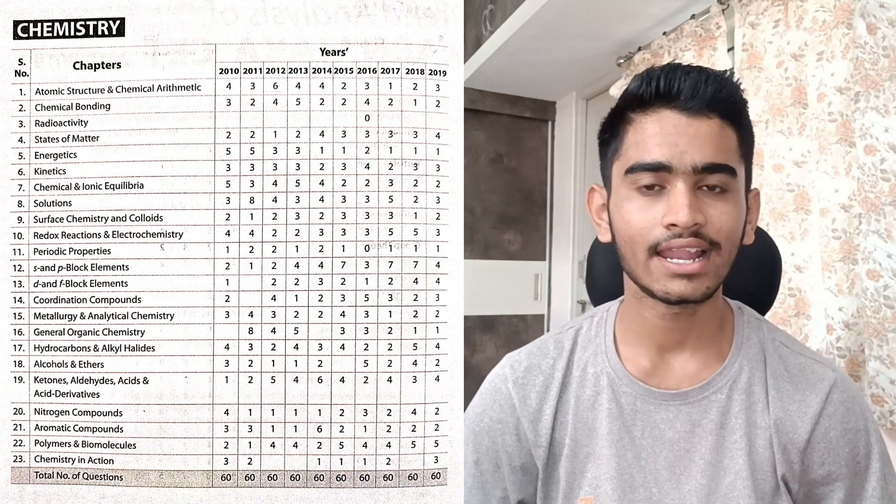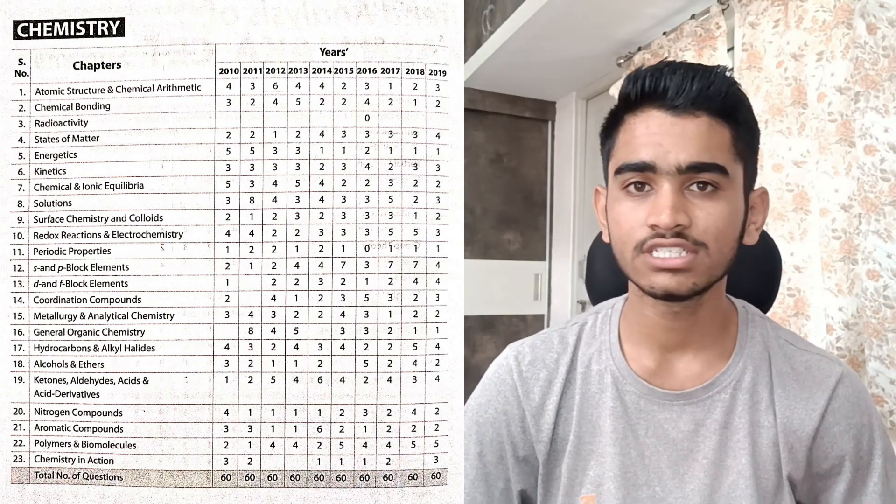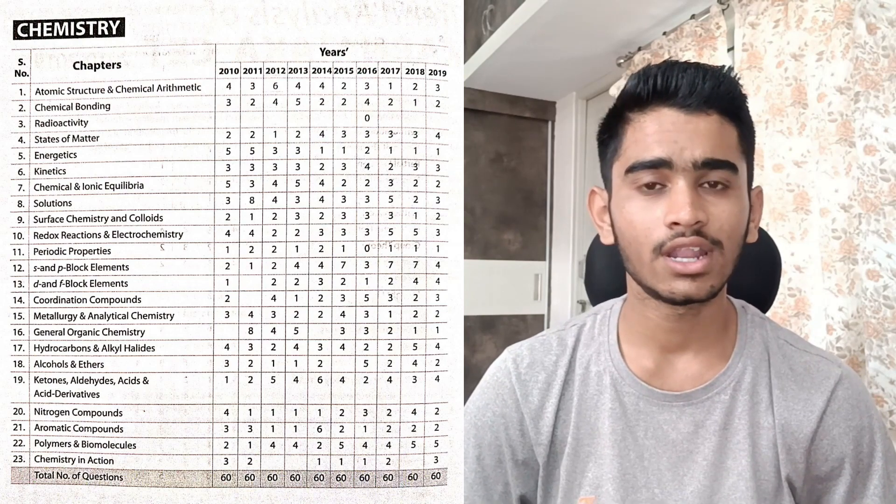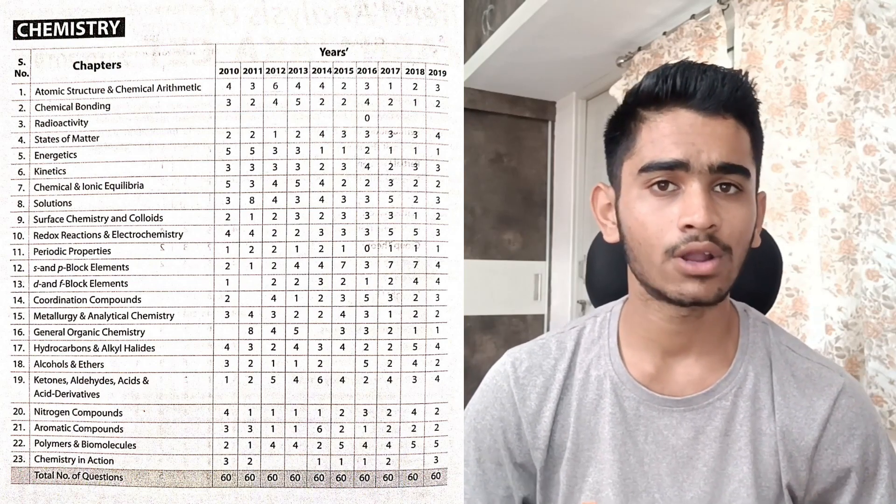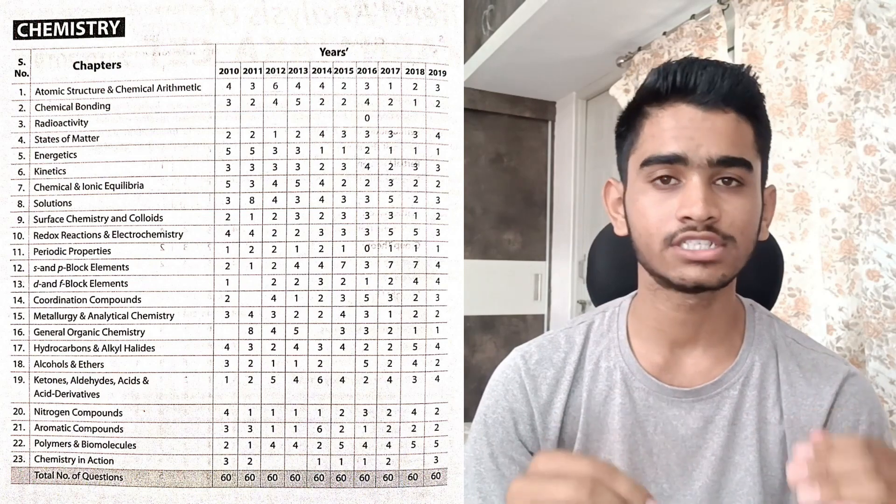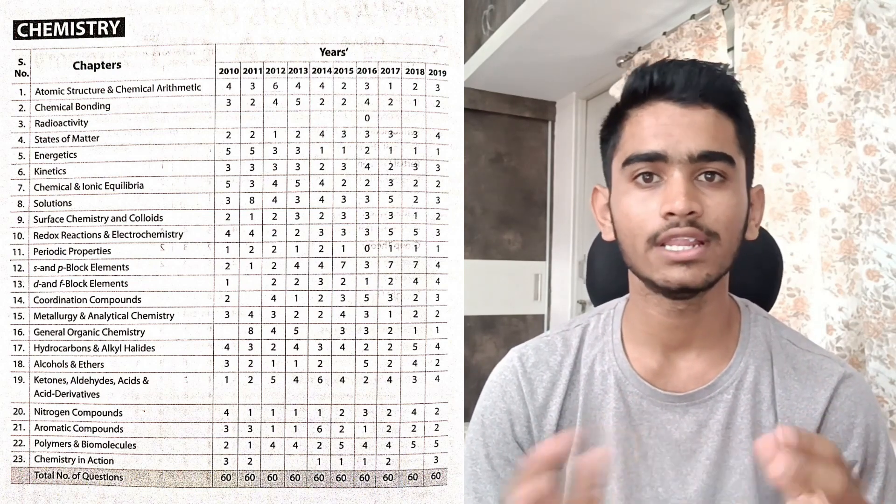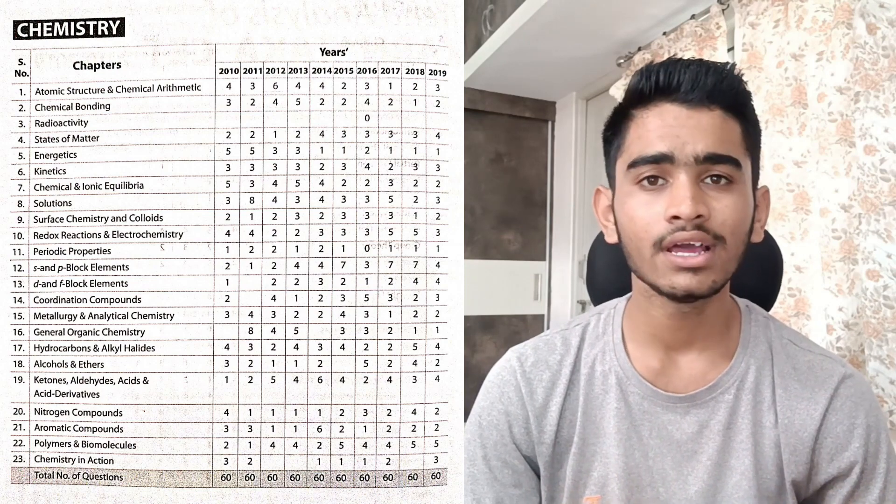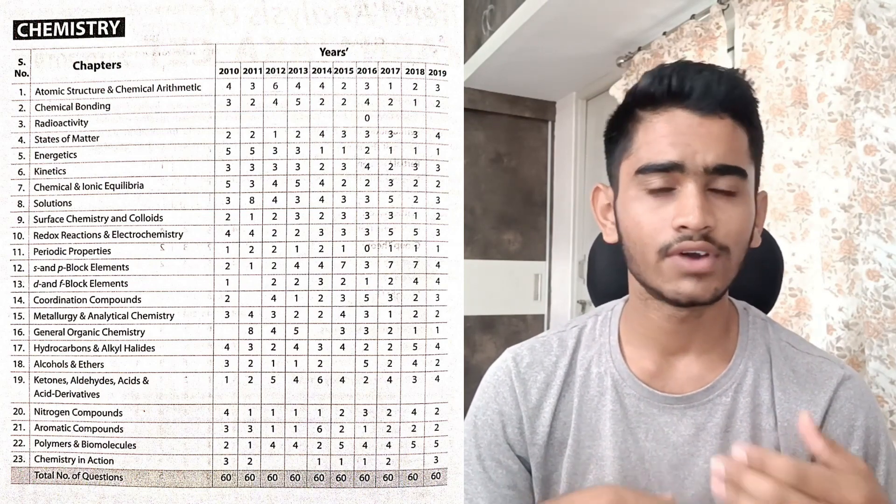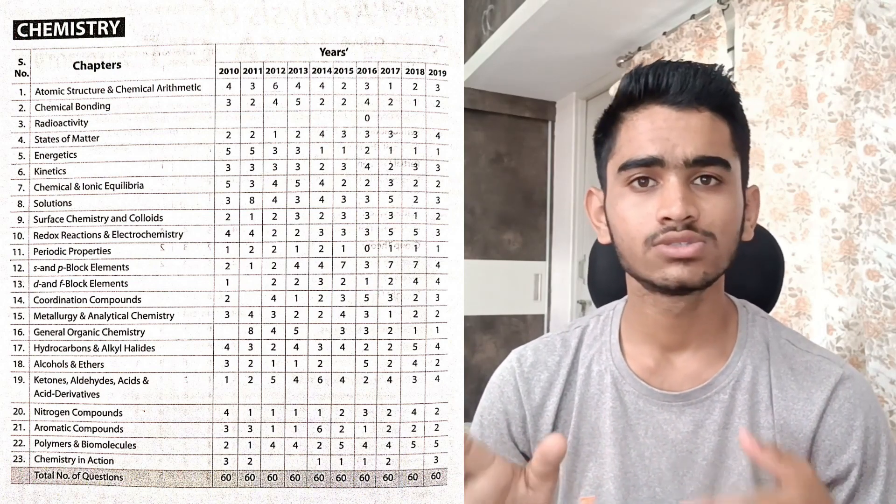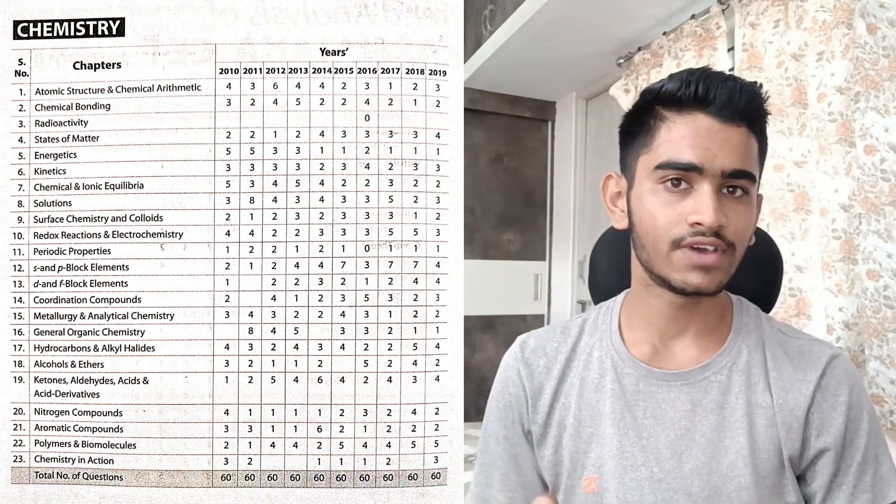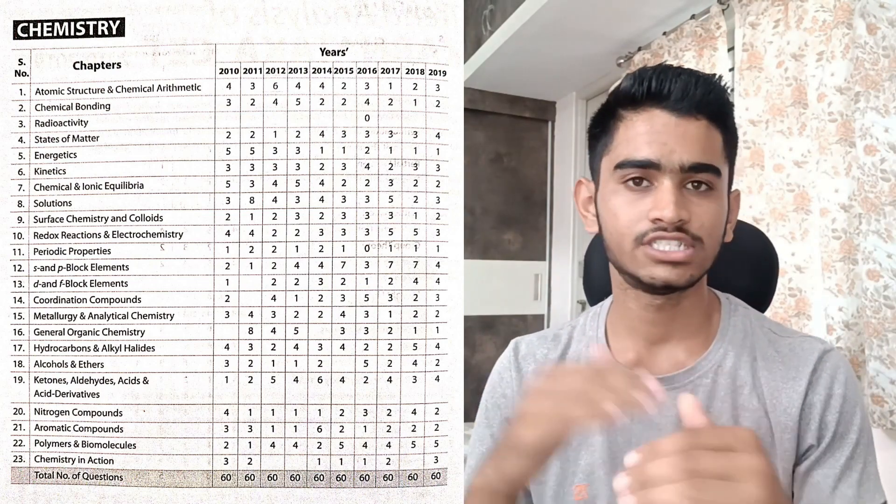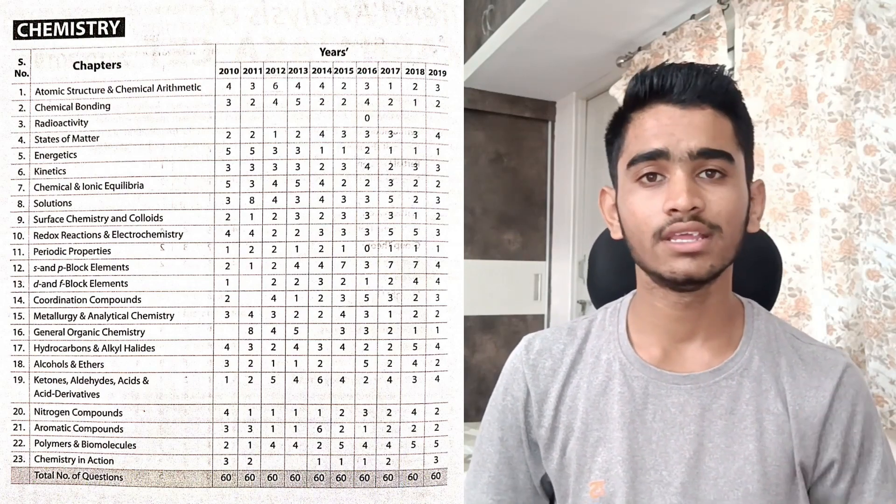On your screen is the detailed chapter-wise weightage of all the chapters that come under this Chemistry part. The reason I posted it here is for you guys to analyze it and come to a conclusion of what chapters you have to deal first and what next. In this very less time remaining, I know you won't be having ample time to cover all the chapters. So, see what weightage the respective chapters are holding. Based on the difficulty level, analyze and create a list wherein you put high weightage chapters on one side and finish them off first, then come to low weightage chapters.